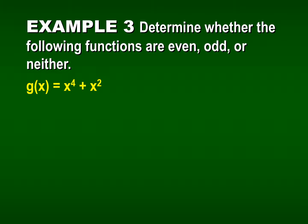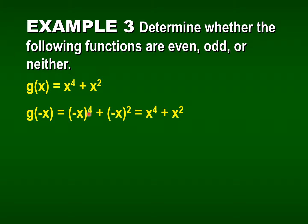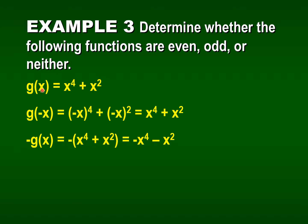Let's do a polynomial: g of x equals x to the 4th plus x squared. We can't just say it's even because it has an even degree — it's not a power function, so we use the definition. Replacing x with negative x: negative x to the 4th is positive x to the 4th, and negative x squared is just x squared. We end up with x to the 4th plus x squared — the same as the original. So it's even.